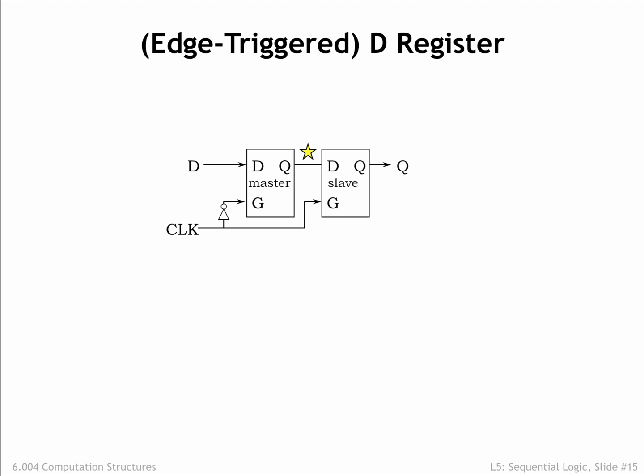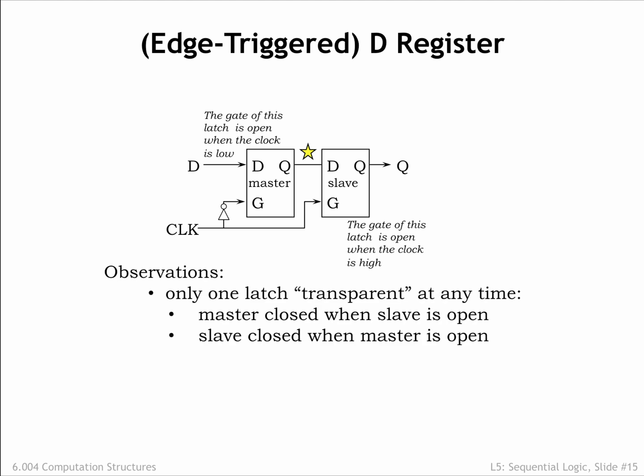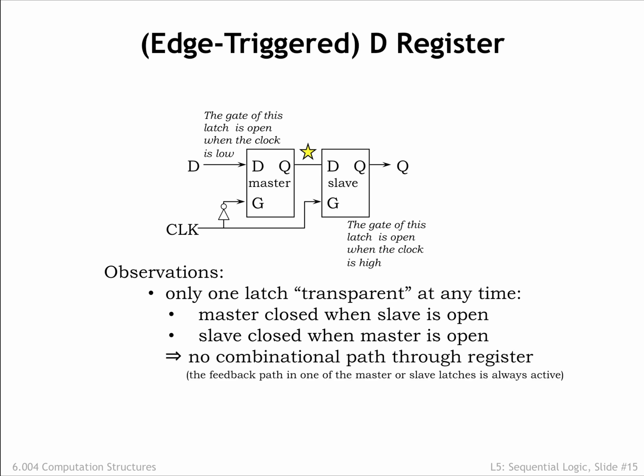The D-input is connected to what we call the master latch, and the Q-output is connected to the slave latch. Note that the clock signal is inverted before it's connected to the gate input of the master latch. So when the master latch is open, the slave latch is closed, and vice versa. This achieves the escapement behavior we saw previously — at no time is there an active path from the register's D-input to the register's Q-output.